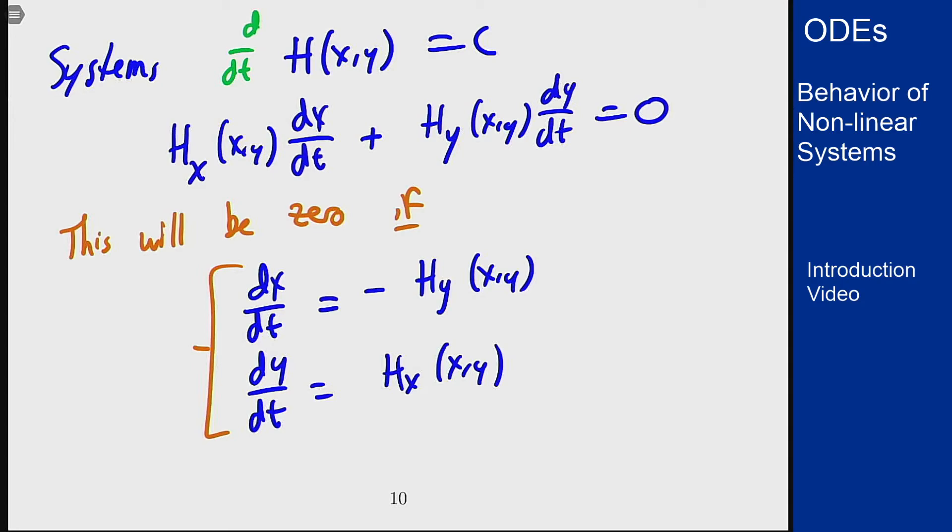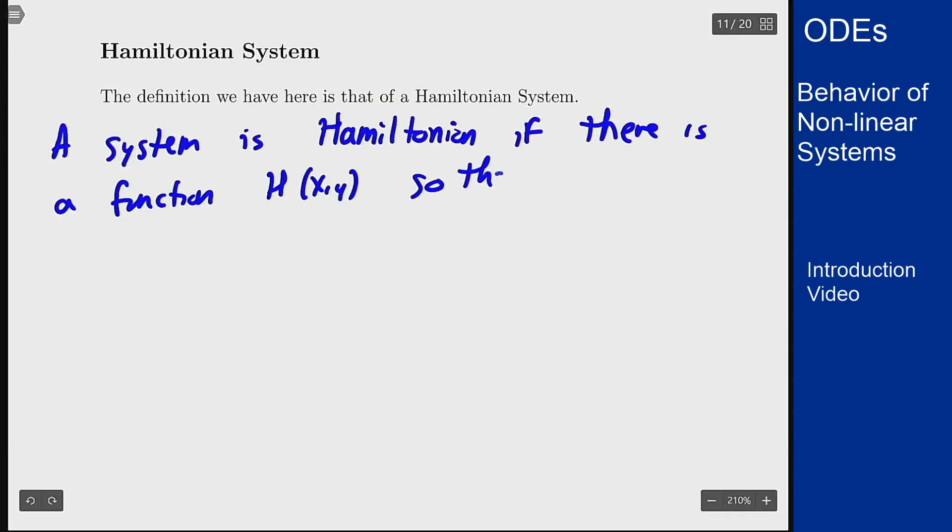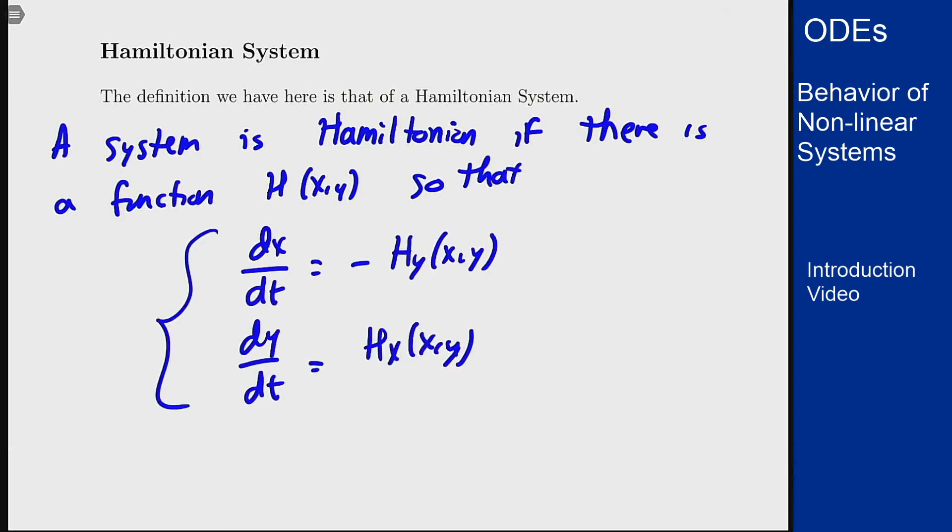So this idea here leads to the idea of a Hamiltonian system. What this means is that we say a system is Hamiltonian if there is a function H(x,y) so that dx/dt is negative H_y, the same as we had before. And what do we get from this?